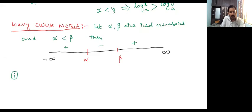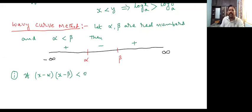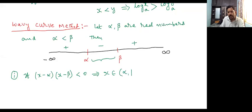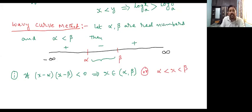First case: if (x minus alpha) into (x minus beta) is less than zero — less than zero means negative. Greater than zero means positive. Less than zero means negative, so where is it negative? In between alpha and beta. So we can write x belongs to open interval (alpha, beta). Why open interval? Because there is no equality symbol. Or we can write it another way: alpha less than x less than beta.